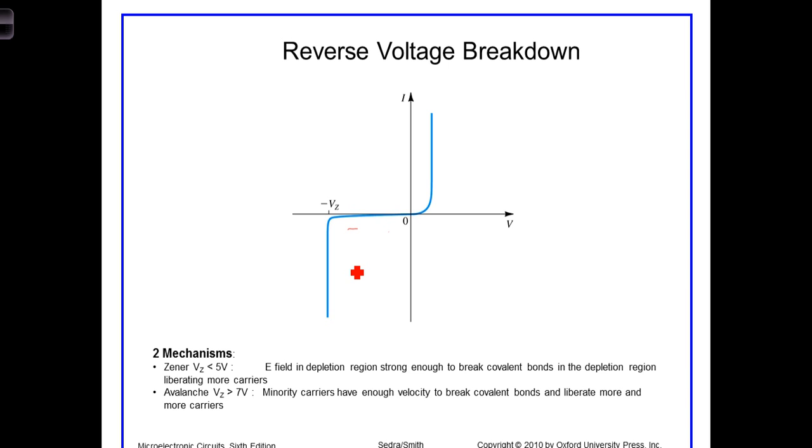There are two different mechanisms that can account for this reverse current flow. The first is known as the Zener effect. In fact, there's a type of diode called a Zener diode designed to use this breakdown effect to limit voltages in a circuit.